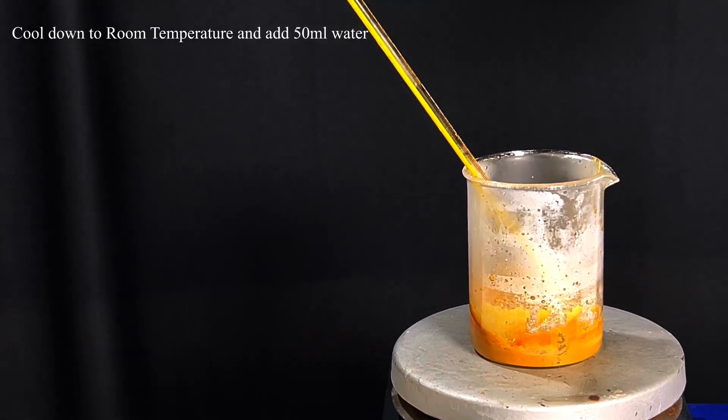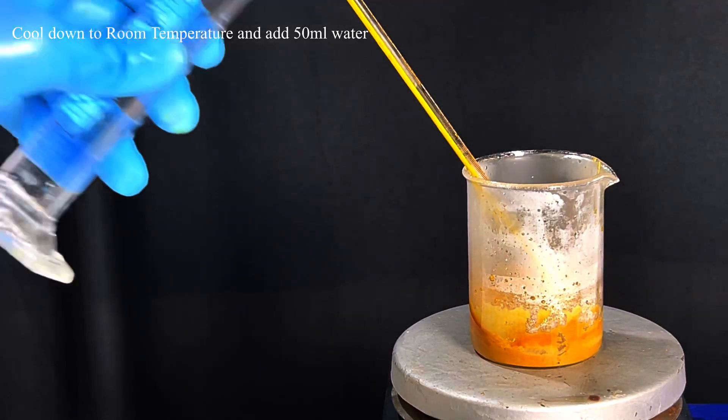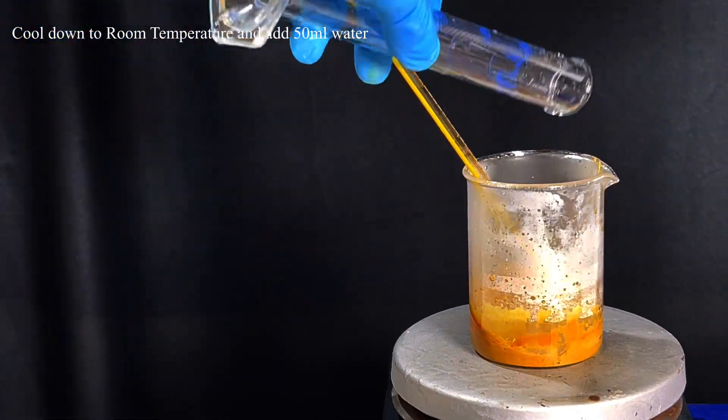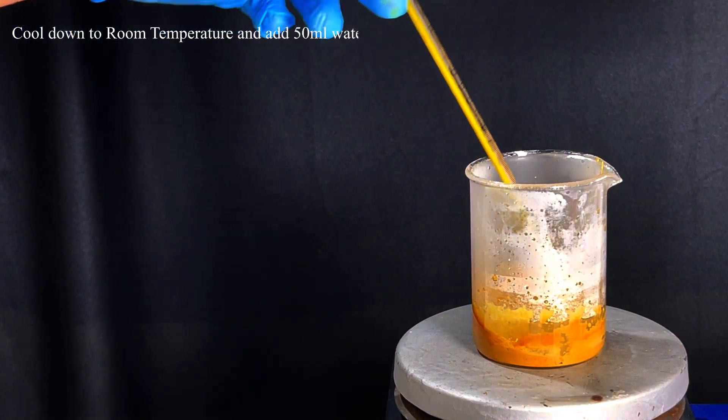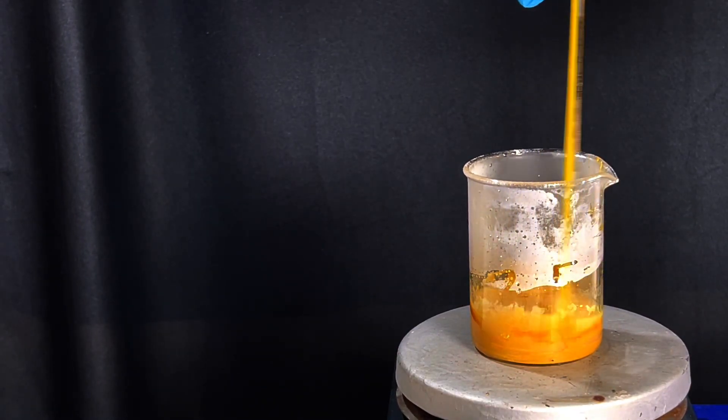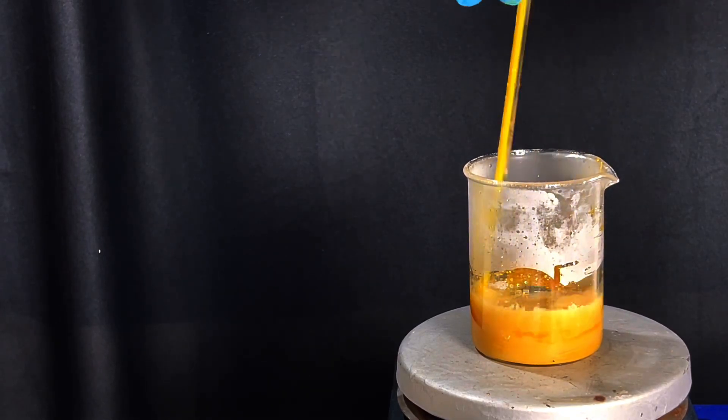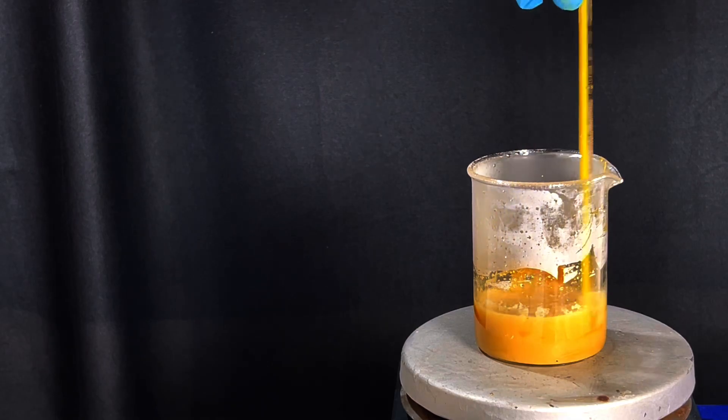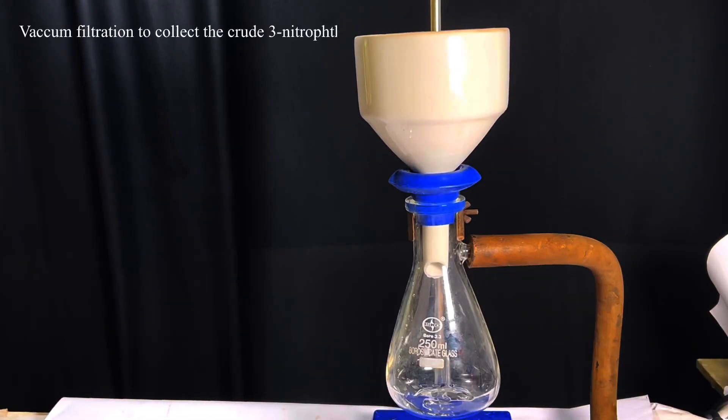After 10 minutes, it's cooled down to room temperature and then 50 milliliters of water was added to the beaker. This will help dissolve all the byproducts which are water-soluble and all the unreacted compounds. Our desired compound 3-nitrophthalhydrazide does not dissolve in water. Here you can see me desperately stirring with a thermometer. One shouldn't be using a thermometer as a stirring rod.